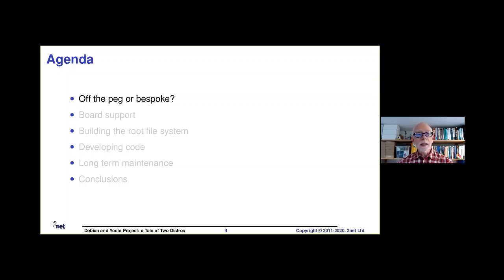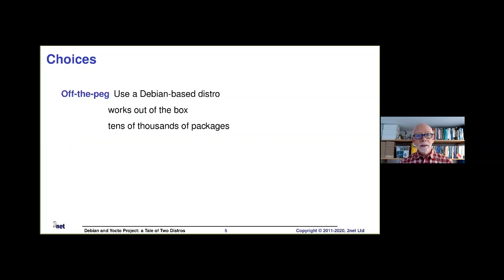This talk is about Debian or Yocto project — which one should you be using for your future embedded systems? It comes down to a discussion about whether we should be using off the peg or bespoke. Off the peg means using something like a Debian-based distro: you grab an image, put it onto your board, it should pretty much work out of the box, install the packages you need, and you're up and running in almost no time.